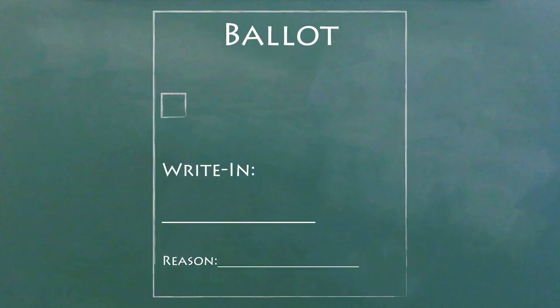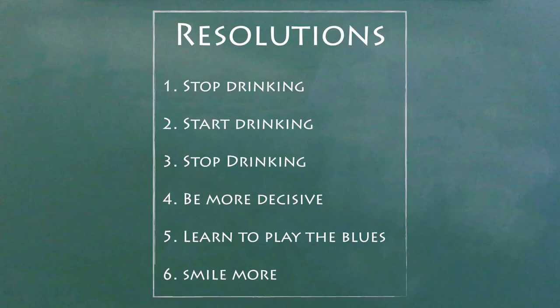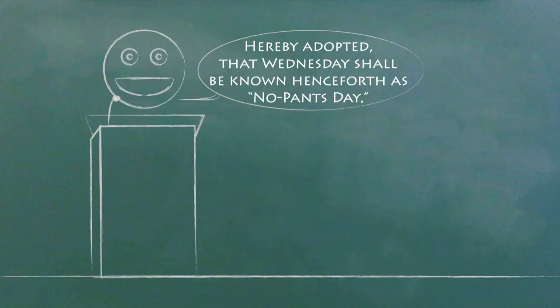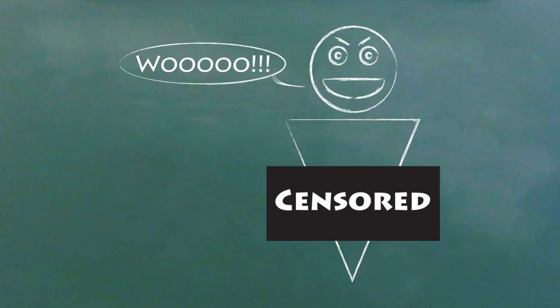Some states allow you to write a name in on the ballot rather than selecting one of the options provided. This has the potential for abuse, though. Aside from electing representatives, many states may also allow resolutions onto the ballot. This is basically voting on a law directly rather than voting on a representative you'd like to vote on the laws. After all, who knows what they'll do once they get into office? These are called initiatives or referenda, and they have their own rules.